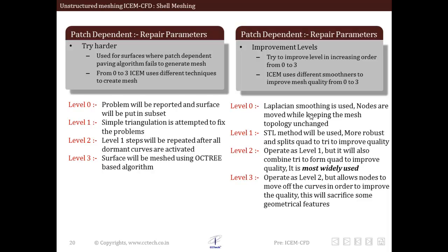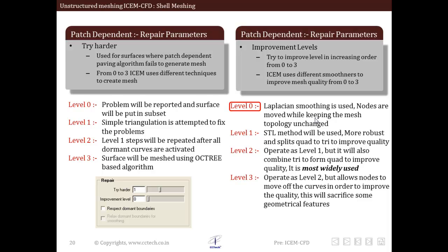Looking at improvement levels in detail: at level 0 only the Laplacian smoother is used — it will not improve quality but improves node distribution. At level 1, any failed loop is meshed with an STL method if quad dominant or all-tri element types have been selected; very bad quadrilaterals will be split into triangles — this is the most used option. Level 2 is the same as level 1 but has flexibility to combine triangles to form quads and to split quads into triangular elements. Level 3 is also similar to level 1 but has the ability to move nodes off the curve to improve quality.